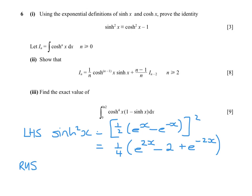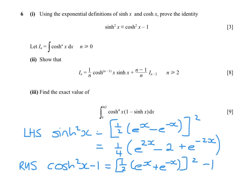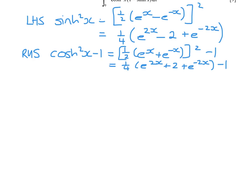If we look at the right hand side, cosh squared x minus 1 will be one half of e to the x plus e to the minus x, all squared minus 1. So that is one quarter of e to the 2x plus 2 plus e to the minus 2x, take away 1. So that is one quarter of e to the 2x plus 2 plus e to the minus 2x, take away 4 quarters.